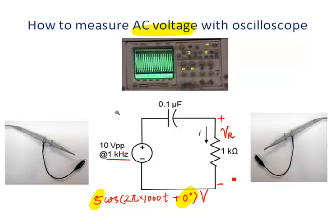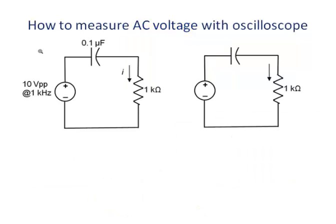Firstly, let's try to calculate VR theoretically. For the sinusoidal steady-state voltage, we can use the phasor domain to calculate the result. So let's convert the circuit into the phasor domain.